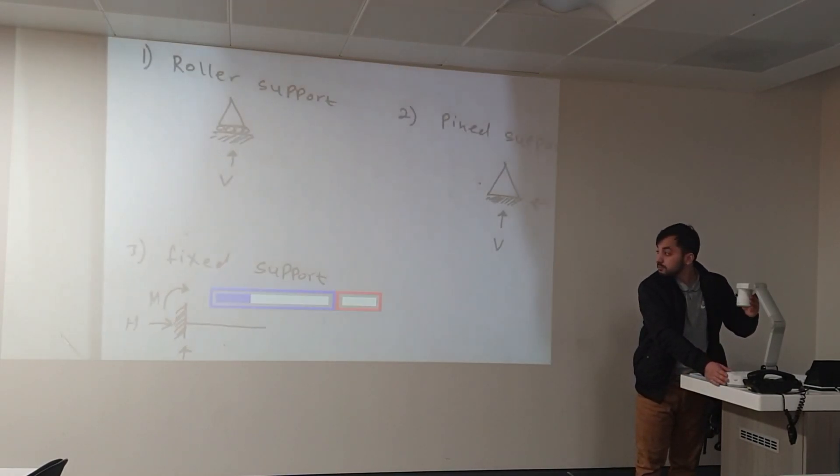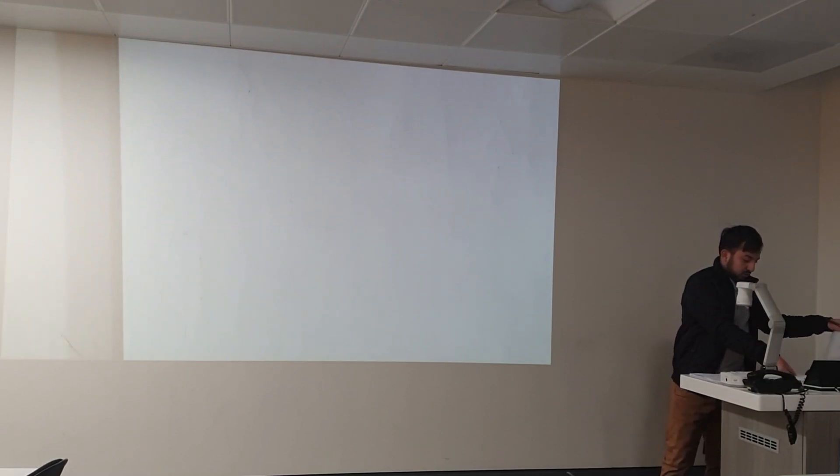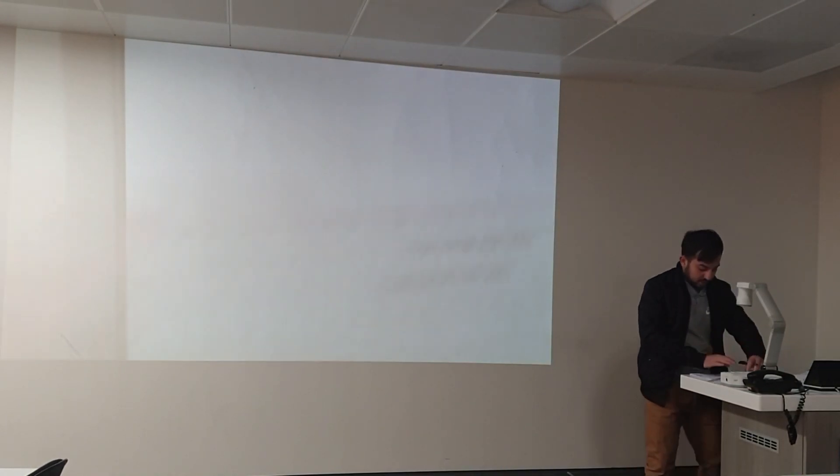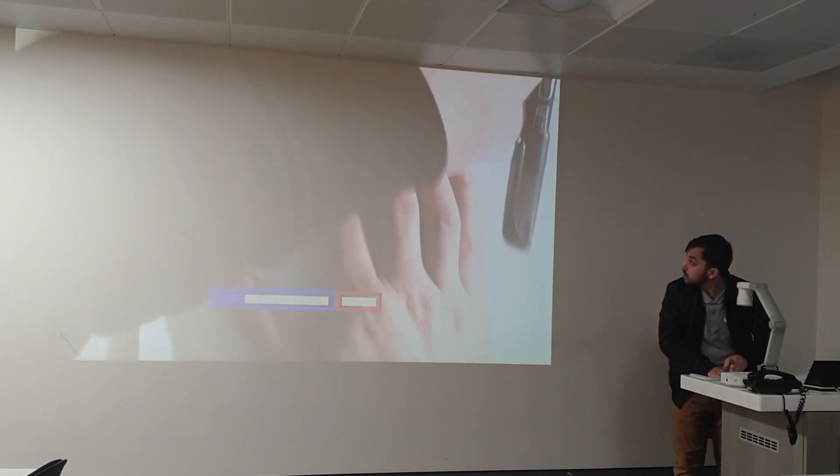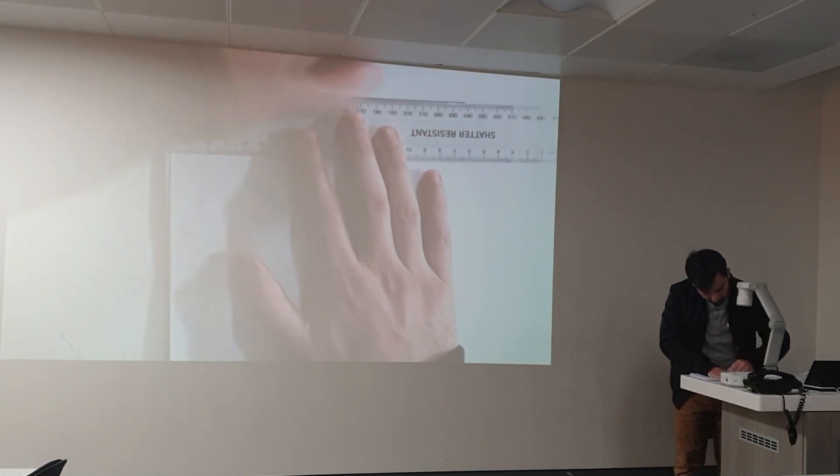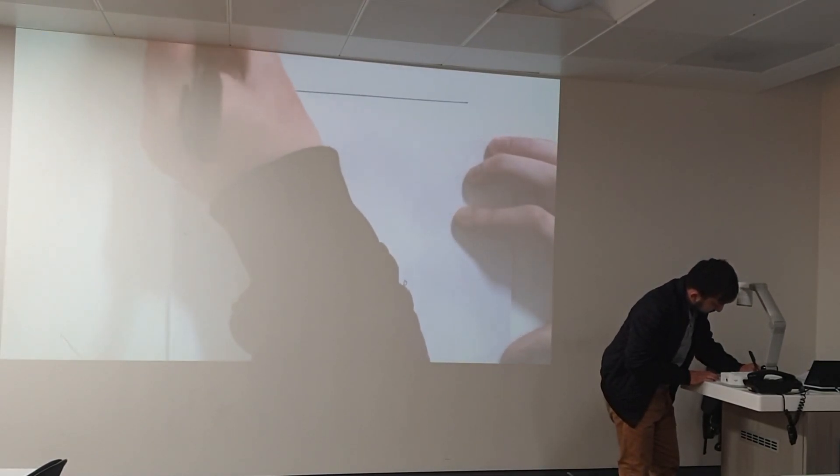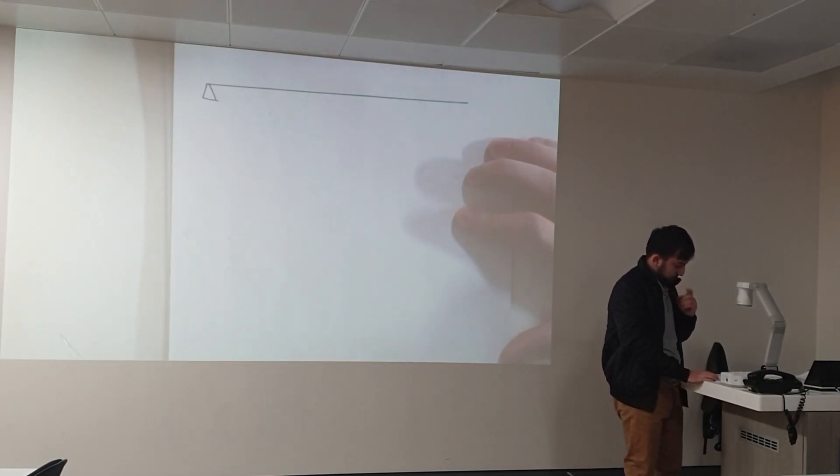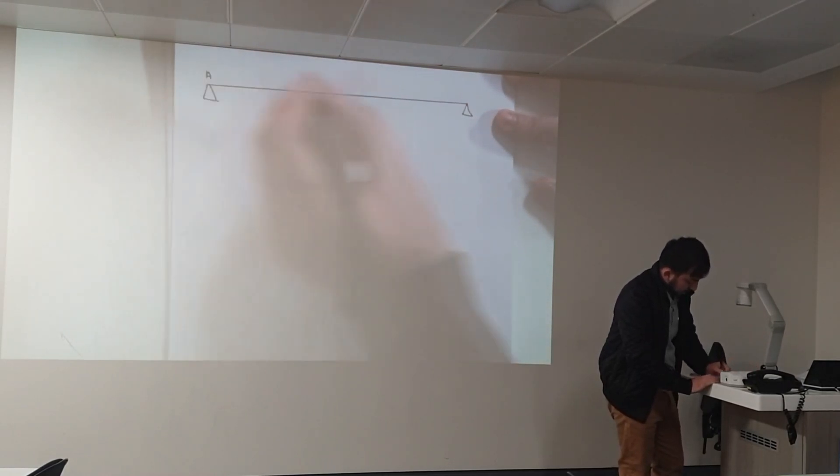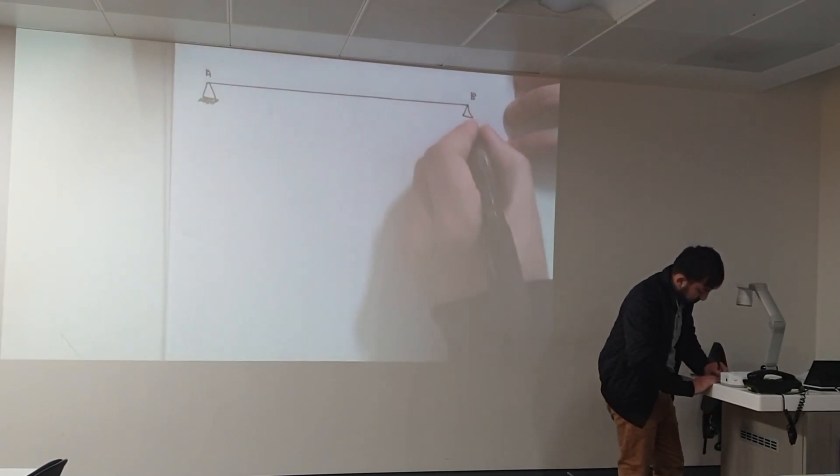Okay, so now let's start our example one. Let me just take out the ruler. Let's say if you have a beam. This is point A and this is point B. So at point A we have pin support, and at point B we have roller support.